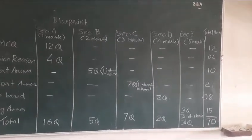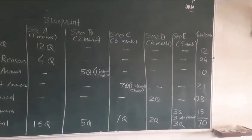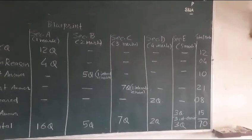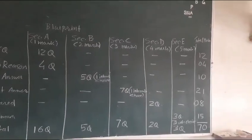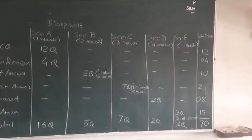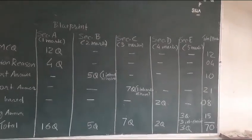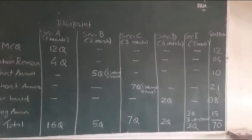Children, all 3 will have their internal choice. So marks distribution, you can see total column. It is written that MCQ 12 marks, Assertion Reason 4 marks, 2 mark question 10 marks, 3 mark question 21 marks, Case Based Question 2 questions 8 marks, and 5 mark question that is long answer question 15 marks. Total marks is 70.